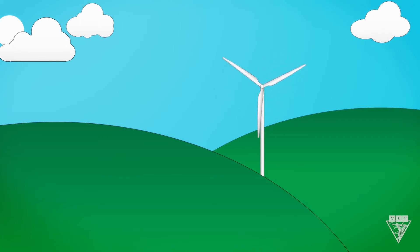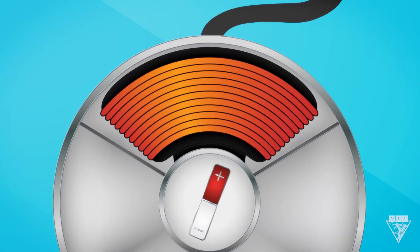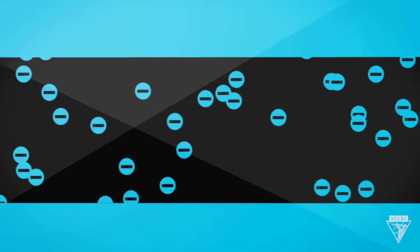So we get that energy has to be converted, and that generators are made of magnets and wire. But what does a flow of electricity look like?